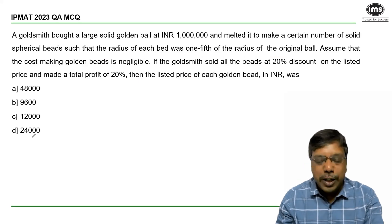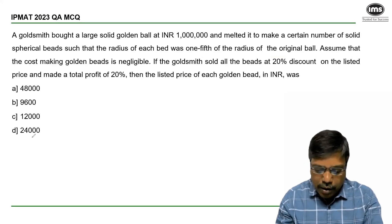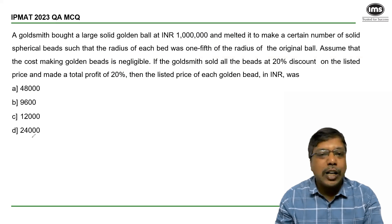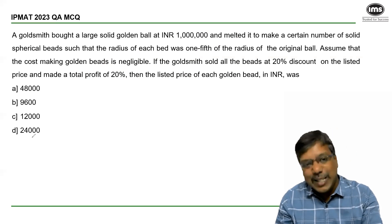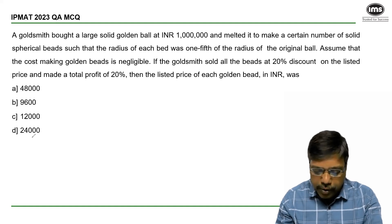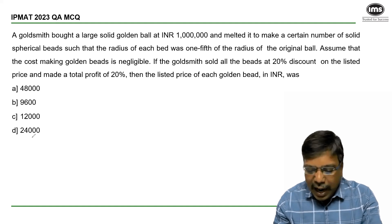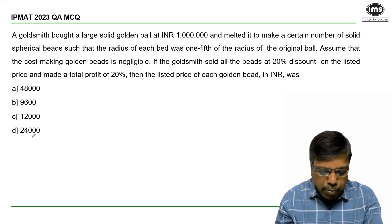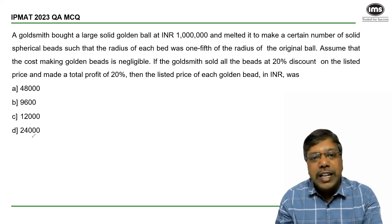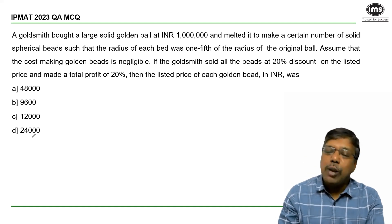Now let's see this question on mensuration. It includes the concept of profit and loss as well. A goldsmith bought a large solid golden ball at 10 lakh rupees and melted it to make a certain number of solid spherical beads, such that the radius of each bead was one-fifth of the radius of the original ball.